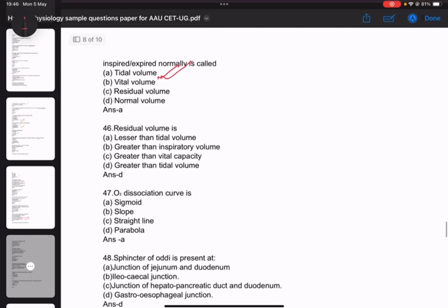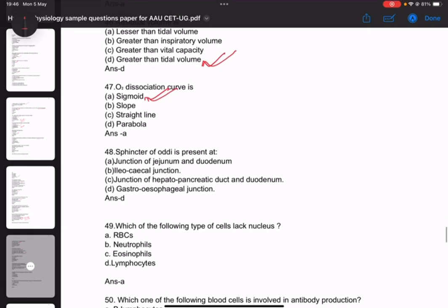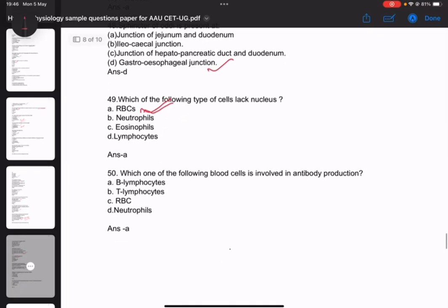Residual volume is greater than tidal volume. Question forty-seven: Oxygen dissociation curve. Question forty-eight: Sphincter is present at gastroesophageal junction. Question forty-nine: Which type of cell lacks nucleus - answer is RBC. Question fifty: Which blood cell is involved in antibody production - answer is B lymphocyte.